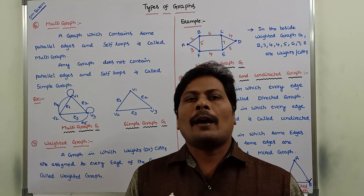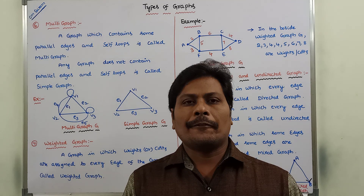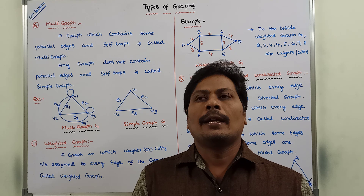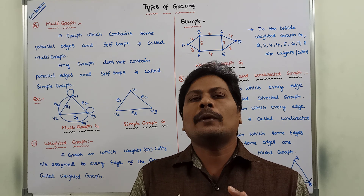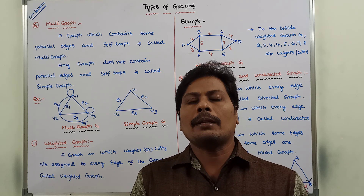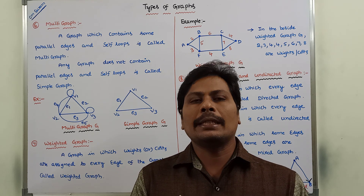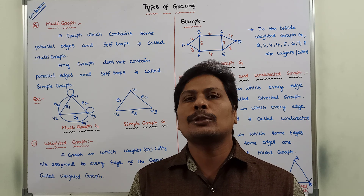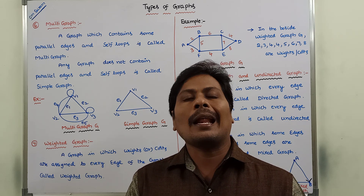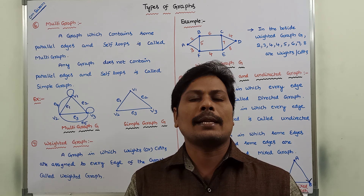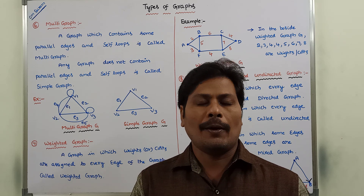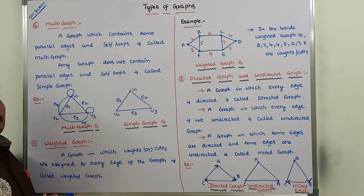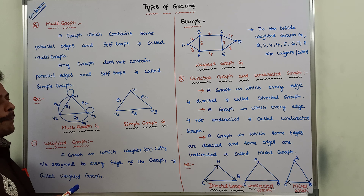The next type of graph is multi-graph. Before going to the definition of multi-graph, first of all, we have to know about parallel edges and self-loops. I am explaining with one example.